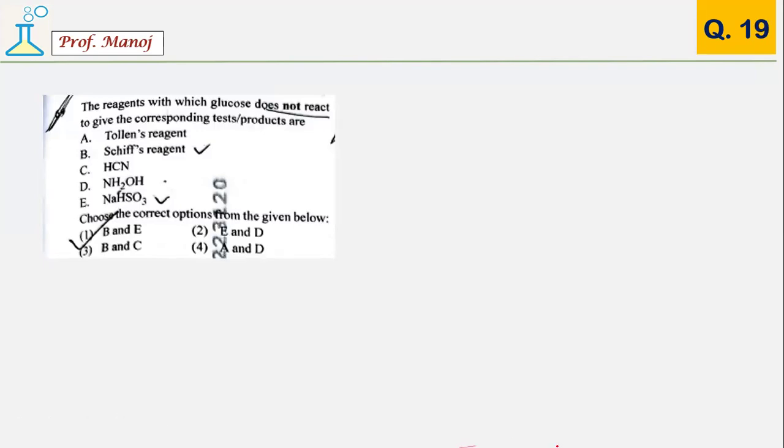Another NCERT pickup question from biomolecules: which compounds do not react with glucose? It has been clearly mentioned in the book that Schiff's reagent and sodium hydrogen sulfite do not react with glucose, although it contains aldehyde group. The answer is 1, that is B and E options.